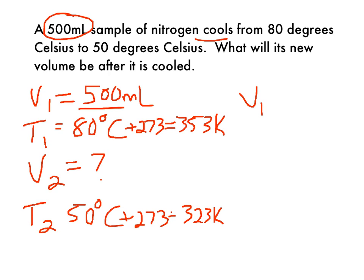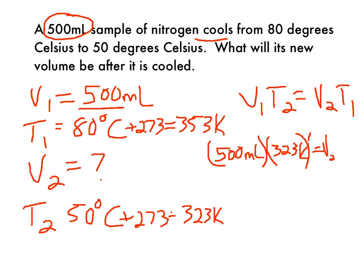So our equation, V1 T2 is equal to V2 T1. And then plug in some numbers. We've got 500 milliliters times T2, which is 323K, equals our V2, which we're just going to leave as V2, times 353K. There you go.